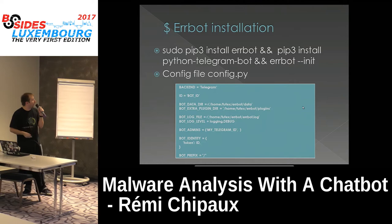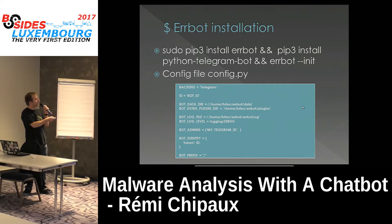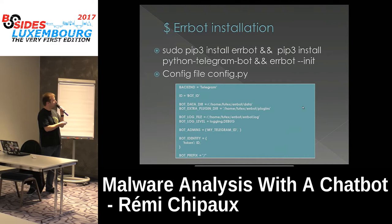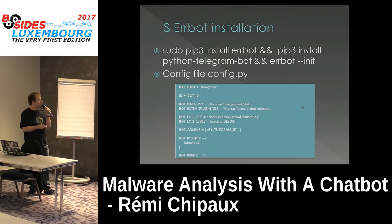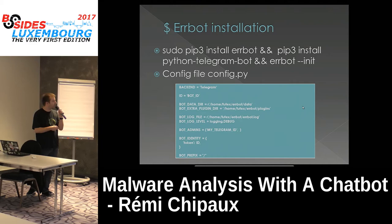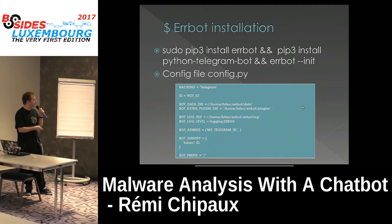To install, use this command line — don't forget errbot --init, it will create a configuration file. In the config you put your token ID returned by BotFather, a data directory used while the bot is running, and your plugins path — this is important, it's where you put your personal plugins.